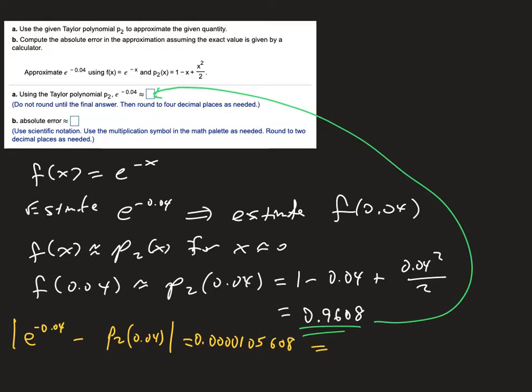And again, if I only want two decimal places, the number that would go up here would be 1.06 times 10 to the minus 5.